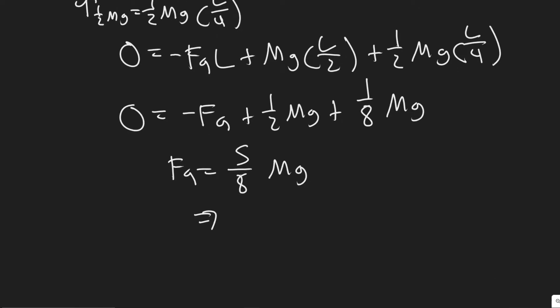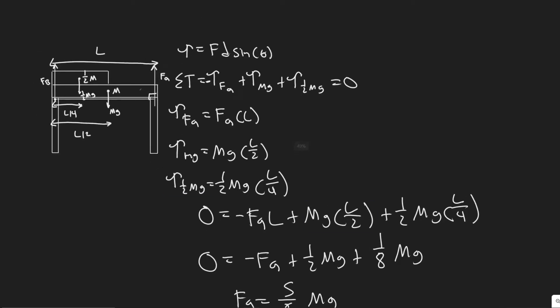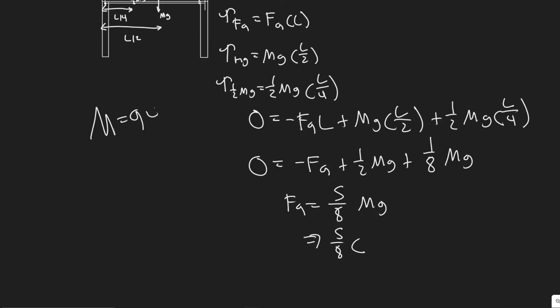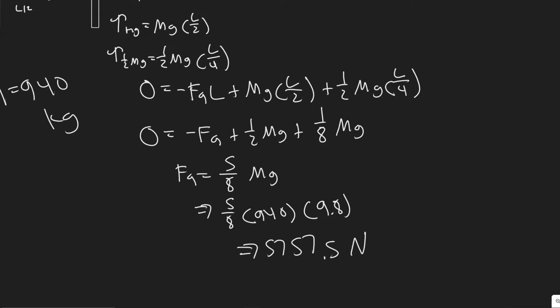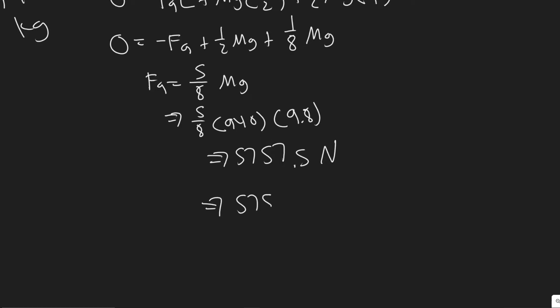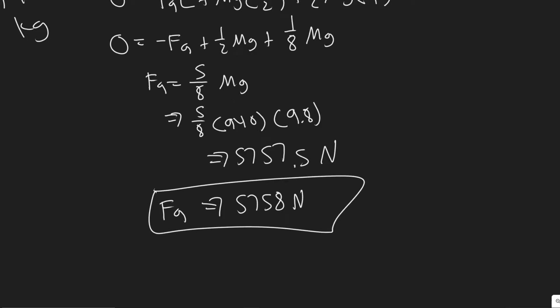So FA equals 5/8 times Mg. The mass of the beam is 940 kg and g is 9.8 m/s². So FA equals 5/8 times 940 times 9.8, which gives approximately 5,757.5 Newtons. Rounding to the whole number, FA equals 5,758 Newtons.